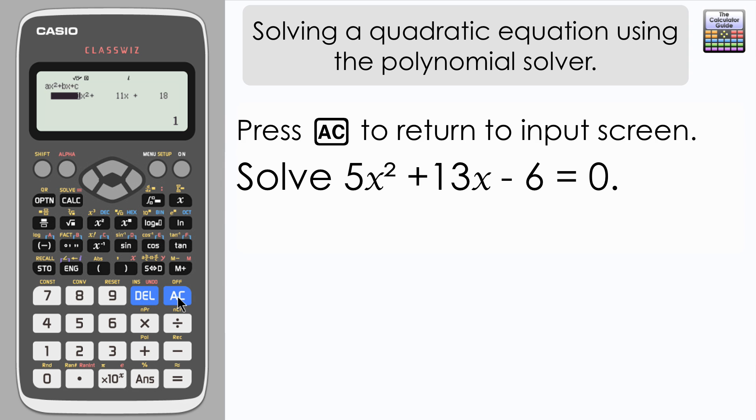I'm just going to press AC to go back to the original screen where you input your coefficients. This time we're going to have a look at another quadratic equation: 5x squared plus 13x minus 6. So 5 is my x squared coefficient, 13 and negative 6 equals.